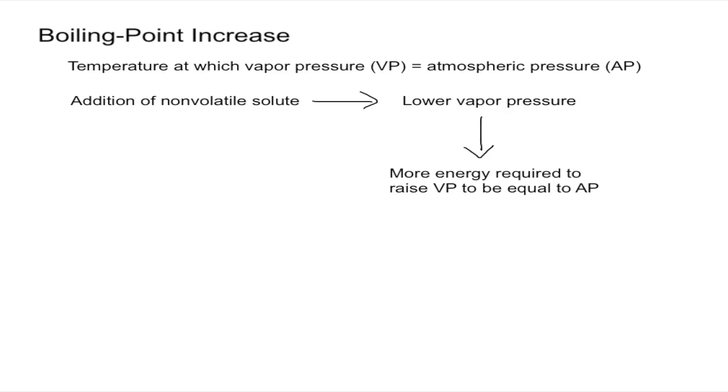Now let's look at the boiling point from a colligative property perspective. When we add a nonvolatile solute to the solution, we'll be lowering the vapor pressure of that solution. Now going back to our definition, the vapor pressure needs to be equal to the atmospheric pressure to obtain that boiling point. Which means that when we have a lower vapor pressure, we will need to add more energy to get that vapor pressure up to what the atmospheric pressure is. So more energy is required to raise the vapor pressure to be equal to the atmospheric pressure.